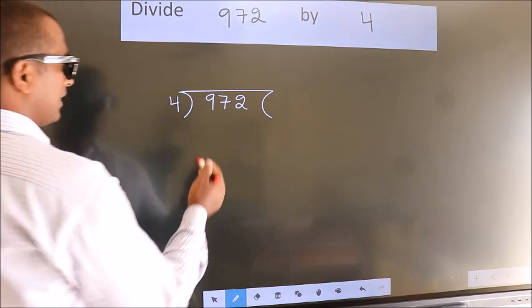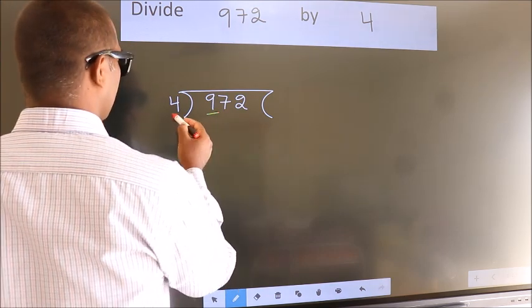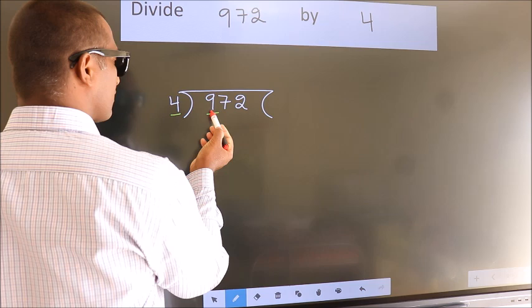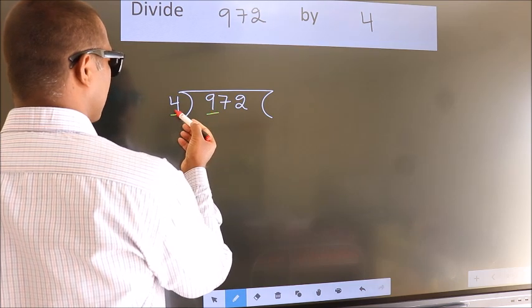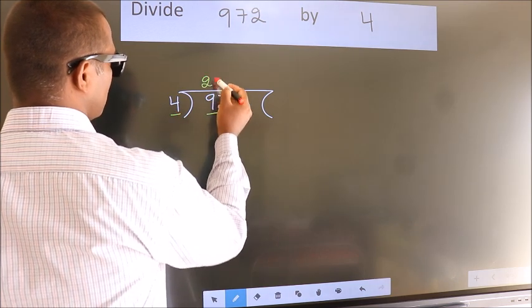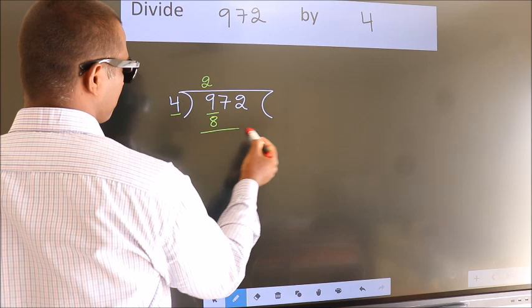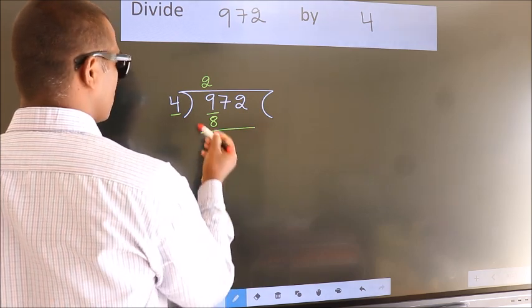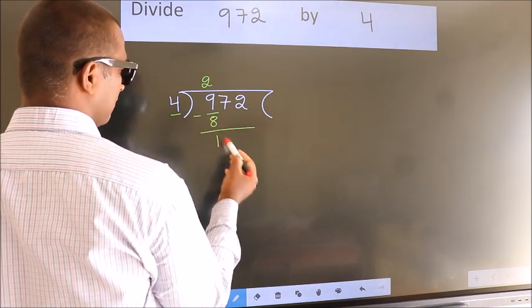Next. Here we have 9, here 4. A number close to 9 in 4 table is 4 2s 8. Now we should subtract. We get 1.